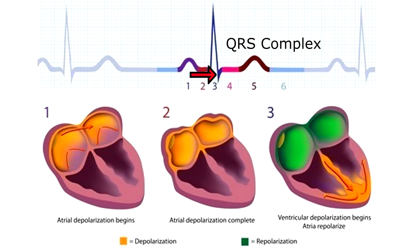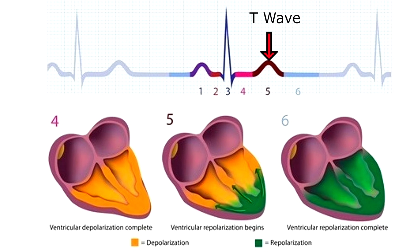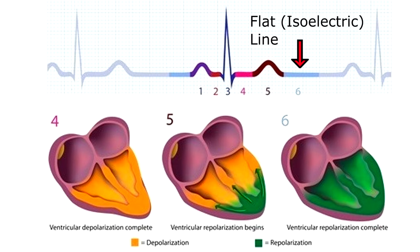And in there, but you can't really see it, is atrial repolarization — it's relaxing. Then four is the ST segment, and that is ventricular depolarization completing. Then we have five, which represents the T wave, and that is ventricular repolarization beginning. And then six is that flat isoelectric line, and this is ventricular repolarization complete.